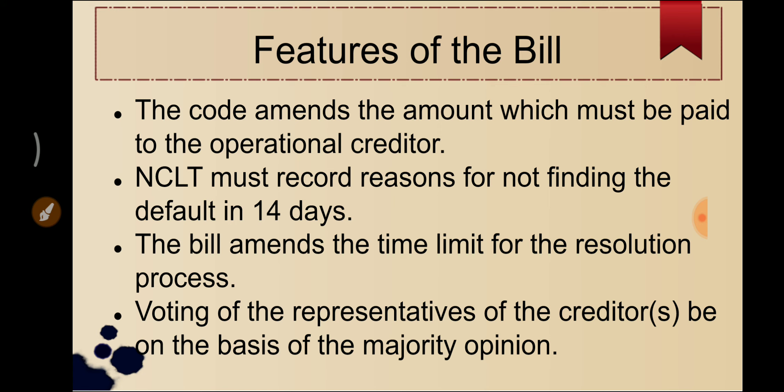Third, the bill amends the time limit for the resolution process. The code states that the insolvency resolution process must be completed within 180 days, extendable by up to 90 days with the approval of NCLT. The bill adds that the resolution process must be completed within 330 days — compared to 180 days previously — and this includes time for any extension granted and time taken in legal proceedings. So the entire process including litigation must be wrapped up within 330 days.